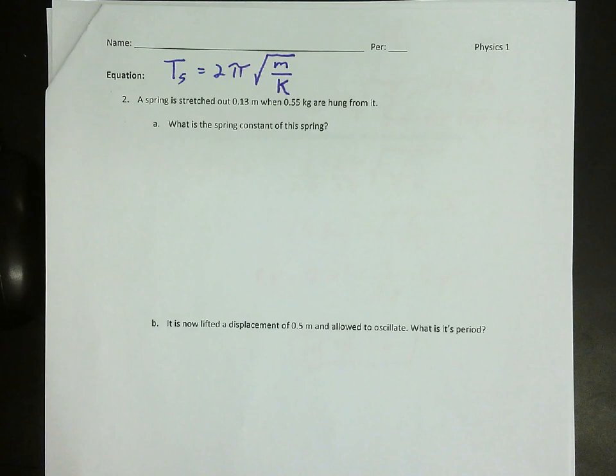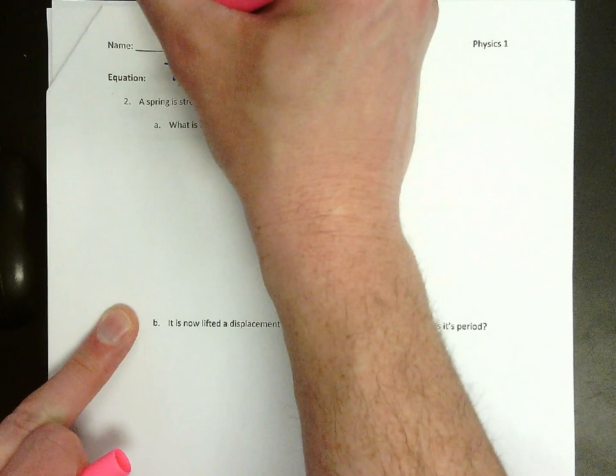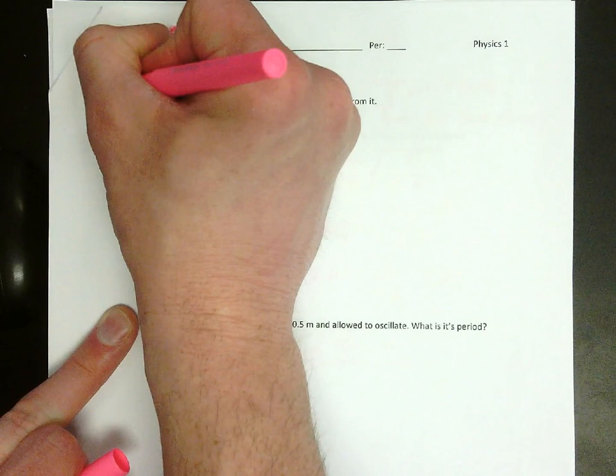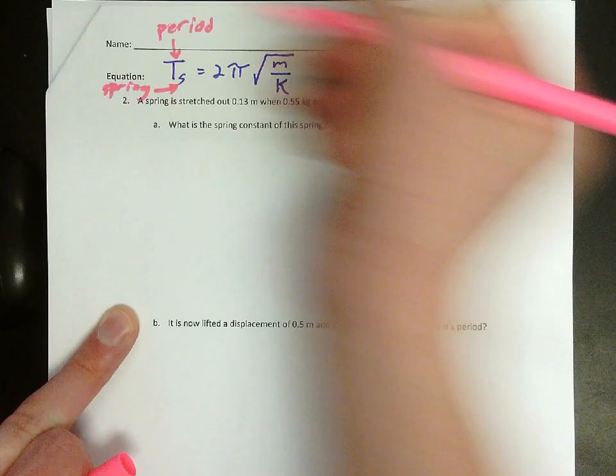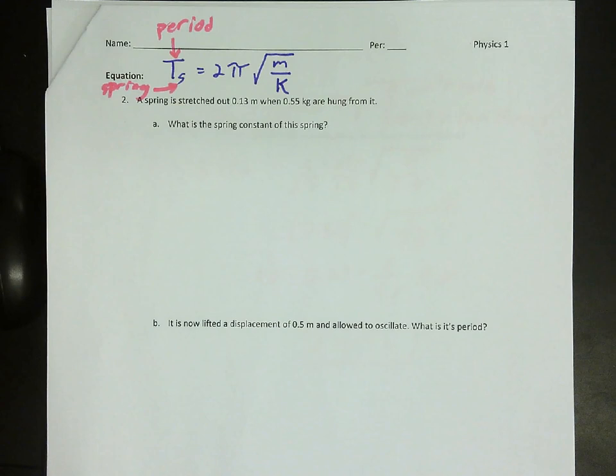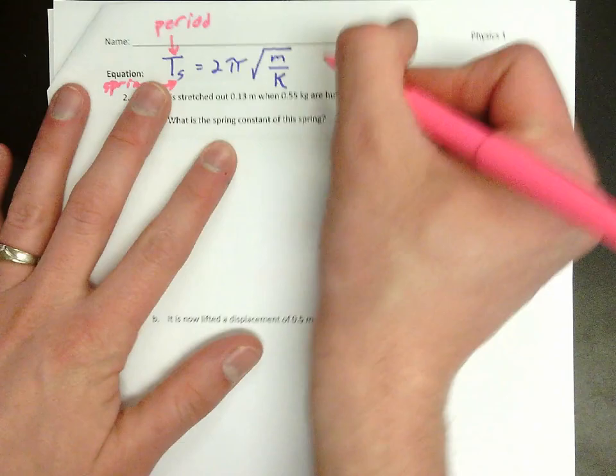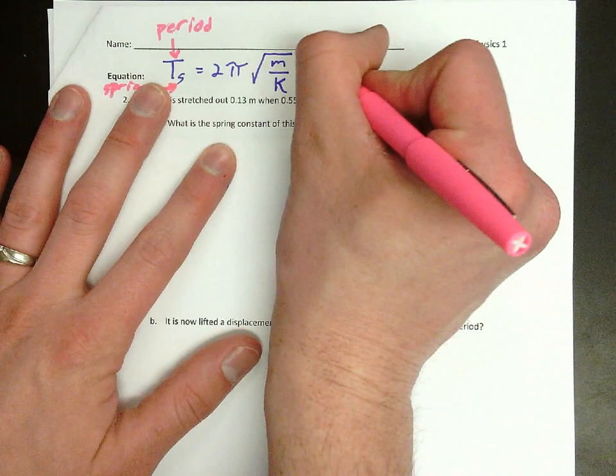And here's what all those symbols mean. Capital T is period, just like it was for the pendulum. The lowercase s is just to remind you that this is for a spring. You don't plug any numbers into it. You're just using it to remind yourself this is a spring and not a pendulum. M is mass, and K is spring constant.